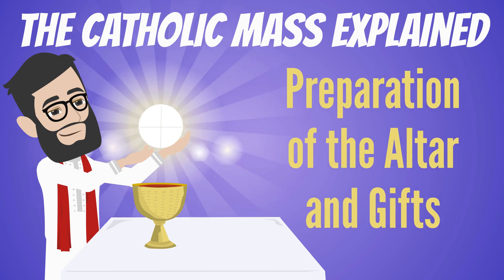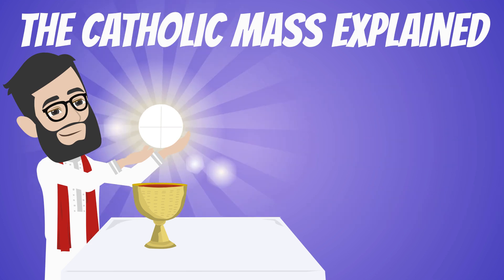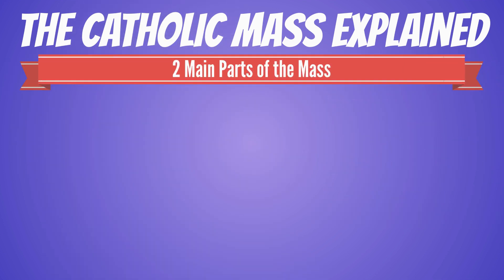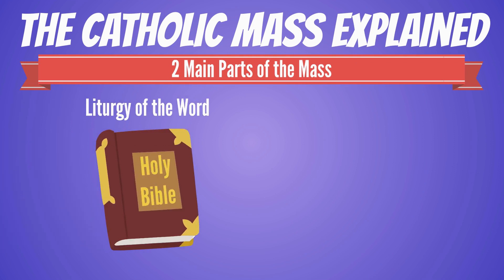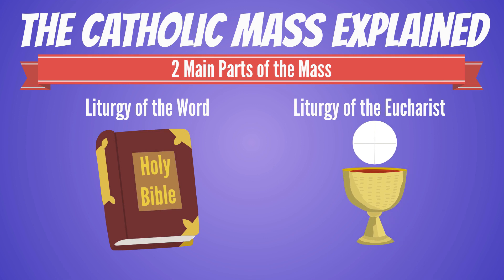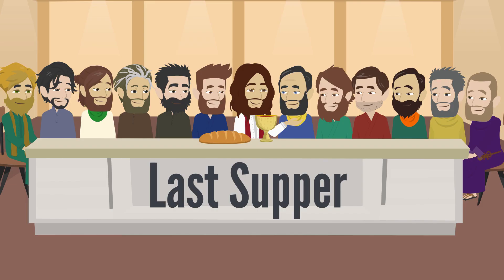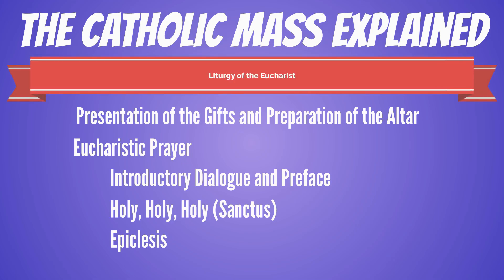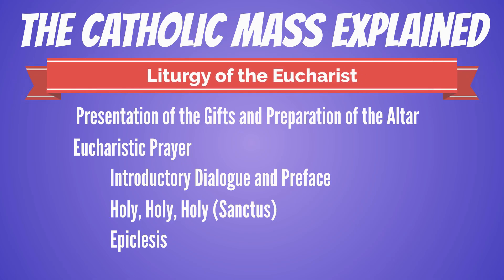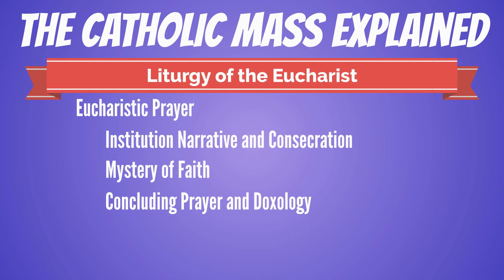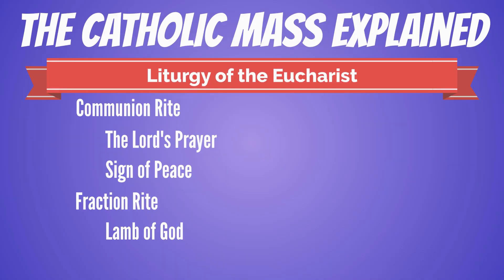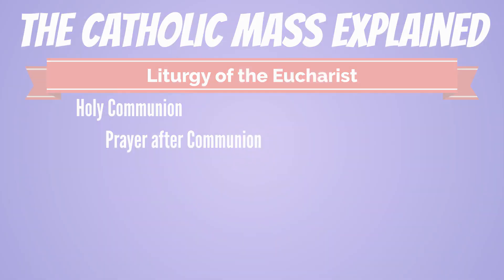What happens during the preparation of the altar and gifts in the Liturgy of the Eucharist? Before we start, we just want to quickly review that there are two main parts of the Mass: the Liturgy of the Word and the Liturgy of the Eucharist. Church teaching places the origin of the Eucharist in the Last Supper of Jesus with His disciples. This video starts the series on the Liturgy of the Eucharist, and here's an overview of the different parts of this liturgy at a glance.